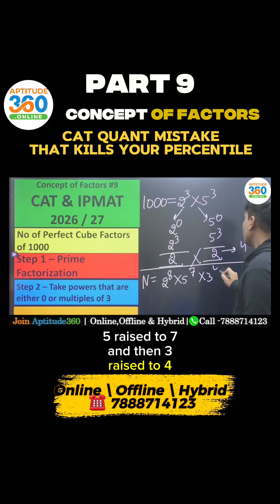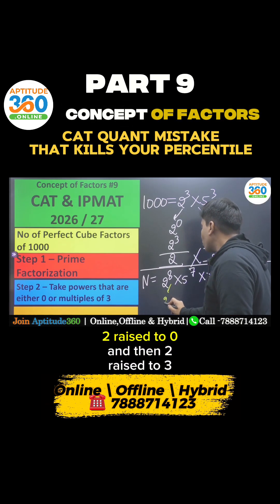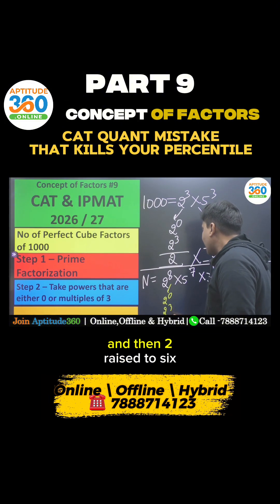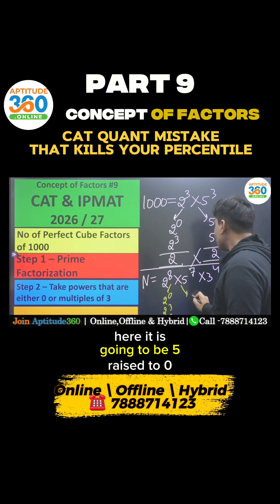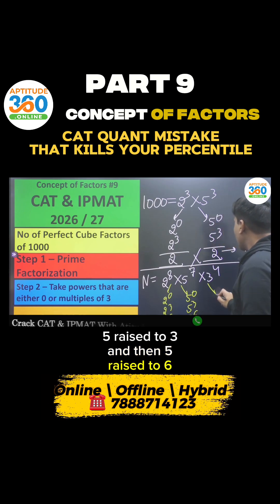So what is that I will be doing over here? It is going to be 2 raised to 0, then 2 raised to 3, and then 2 raised to 6. Here it is going to be 5 raised to 0, 5 raised to 3, and then 5 raised to 6.